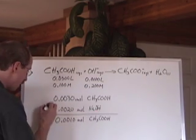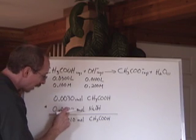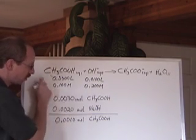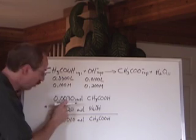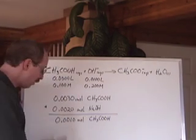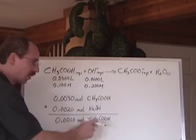Who's the limiting reagent? The base is. So how much acetic acid is left over? Well, they react in a one-to-one ratio, so 0.002 here can only react with 0.002 here, which leaves us with 0.001 moles of acetic acid.